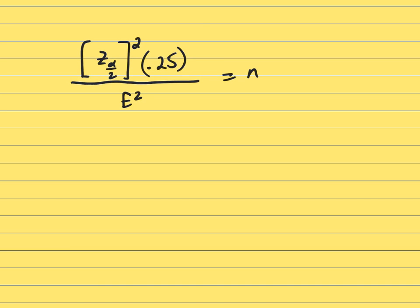Okay, so this is a formula we use and the reason we're using this formula with the 0.25 here as a second factor is because we do not know anything about P or Q.